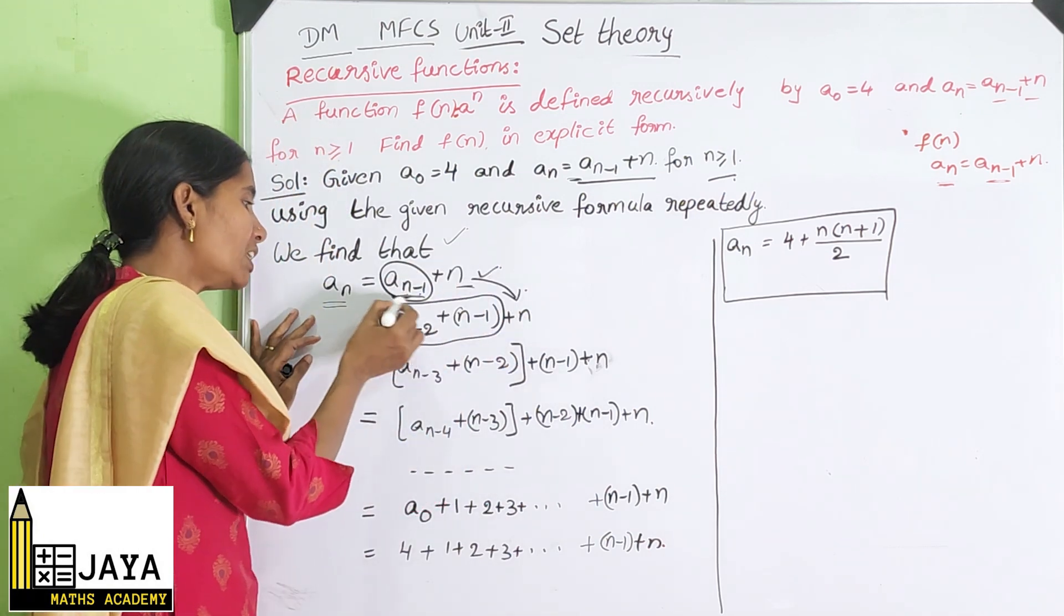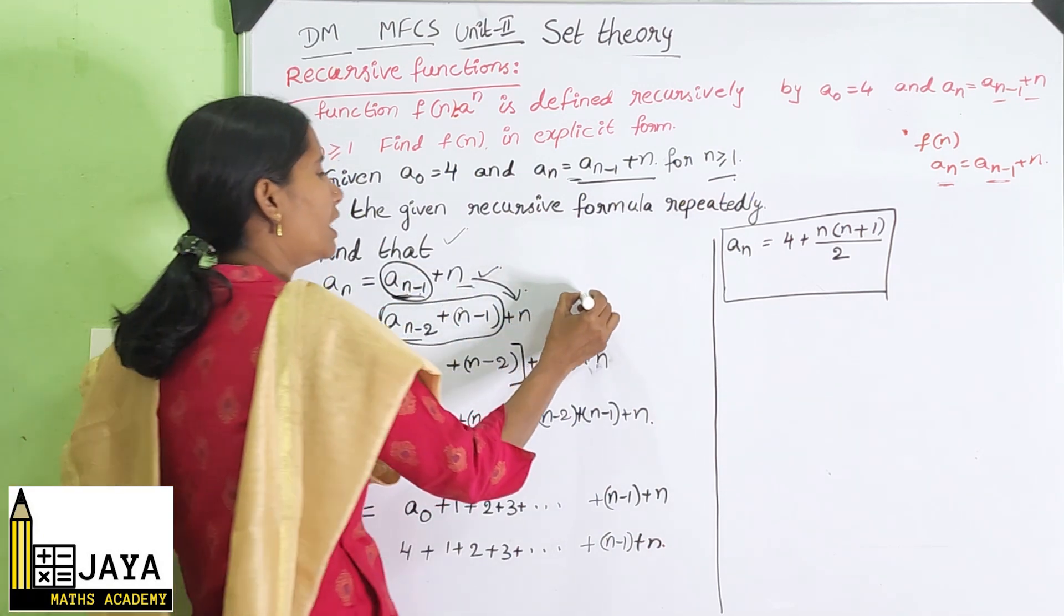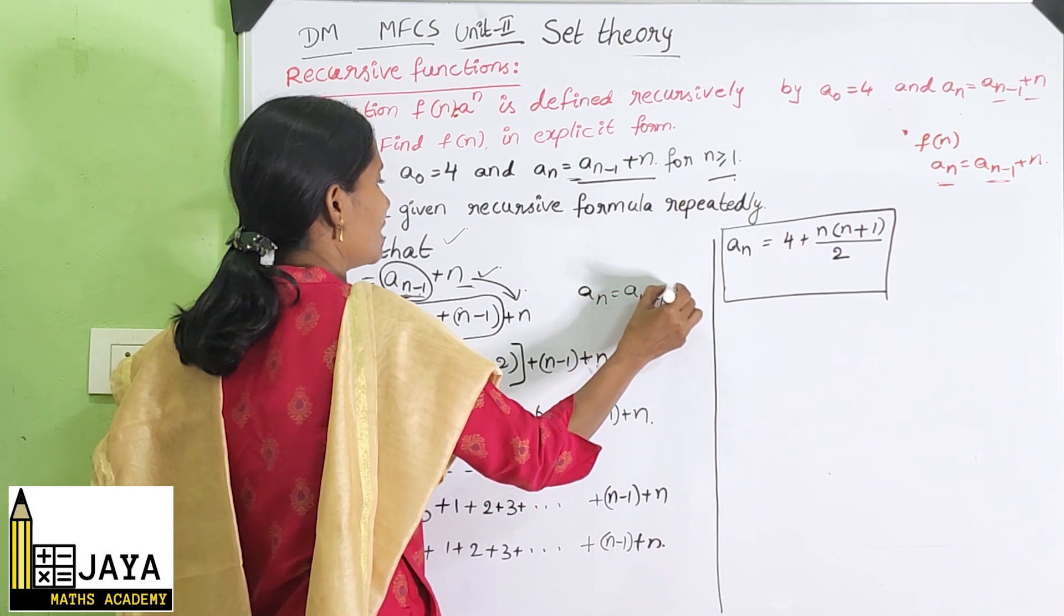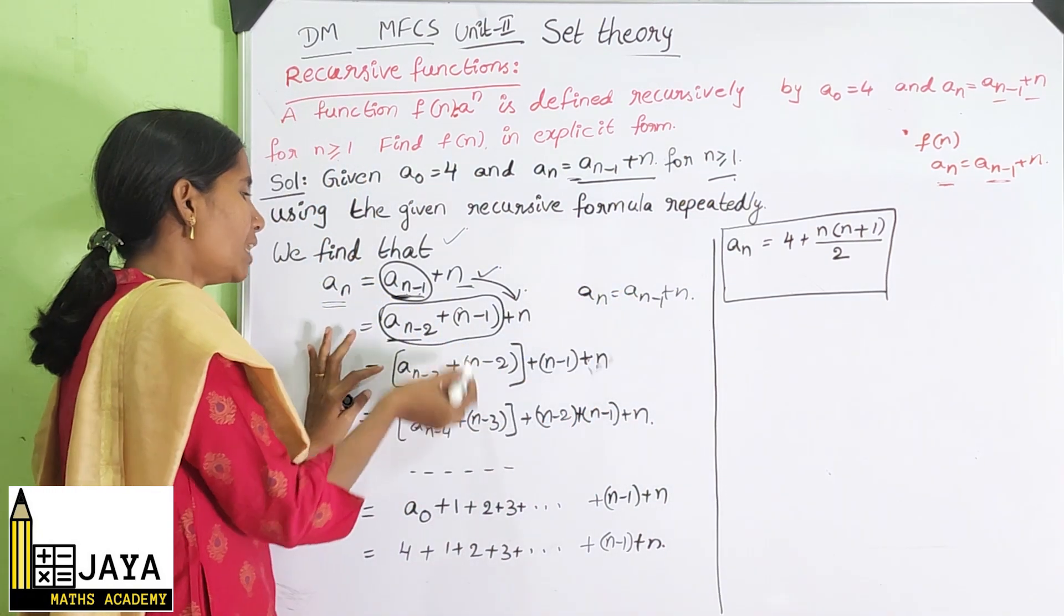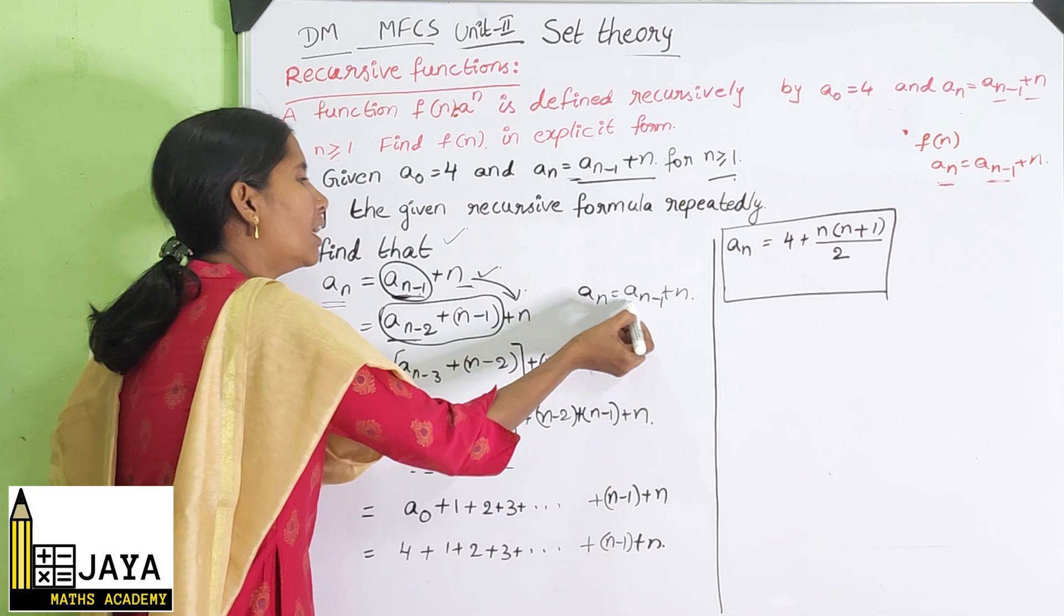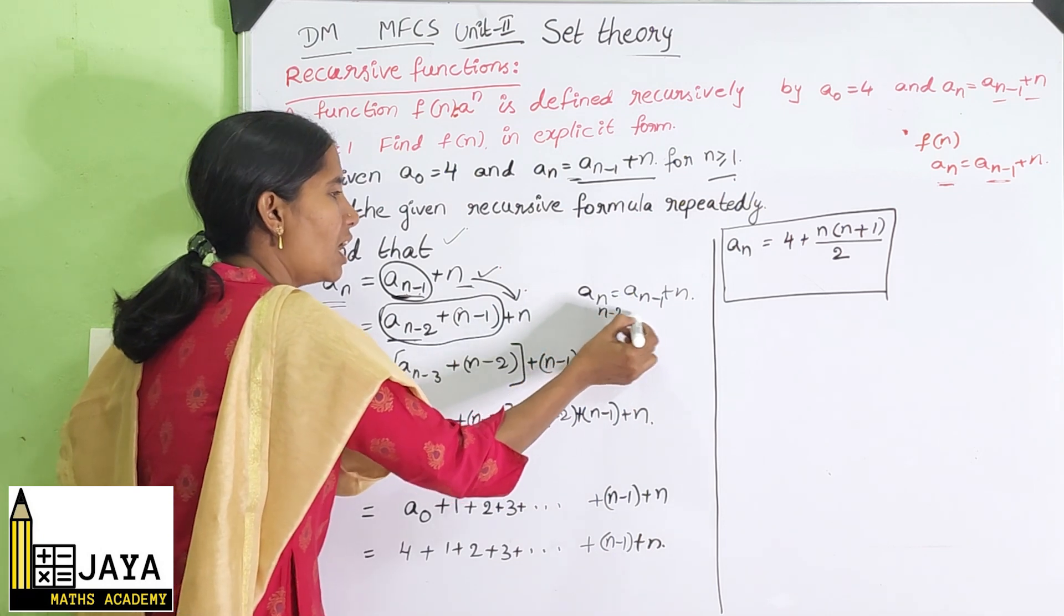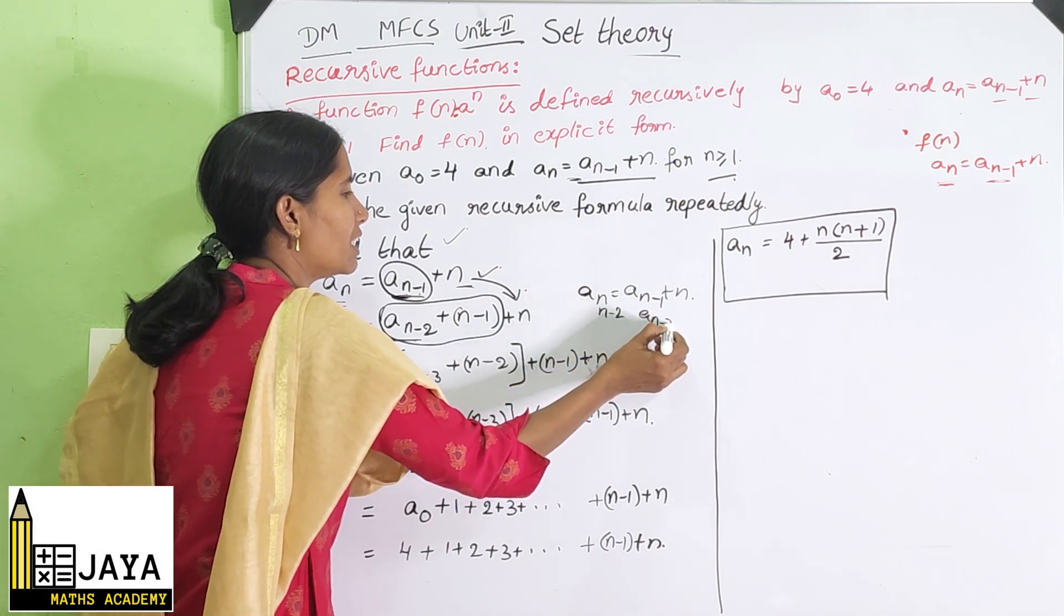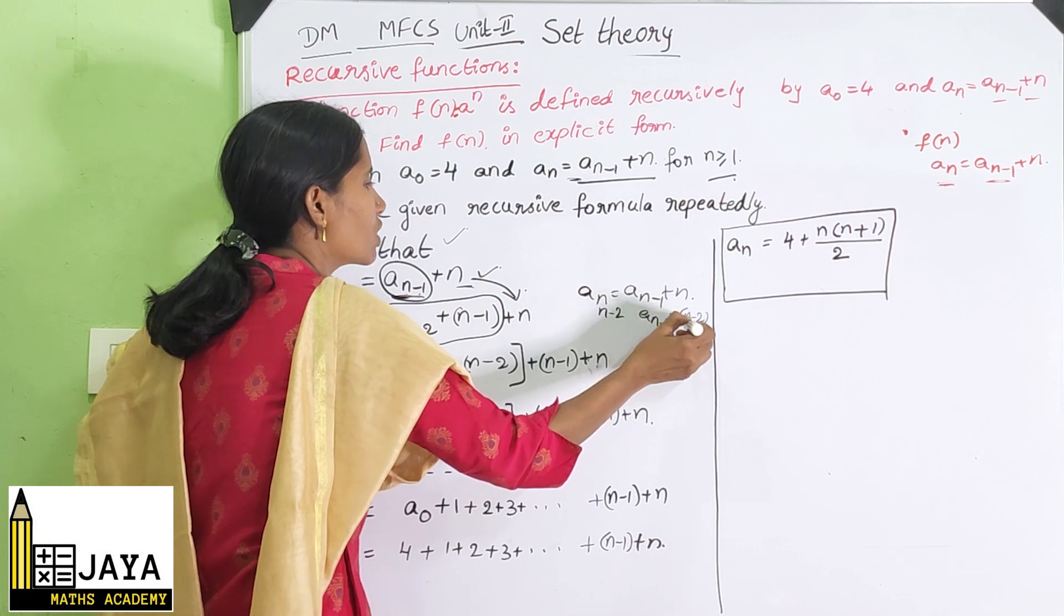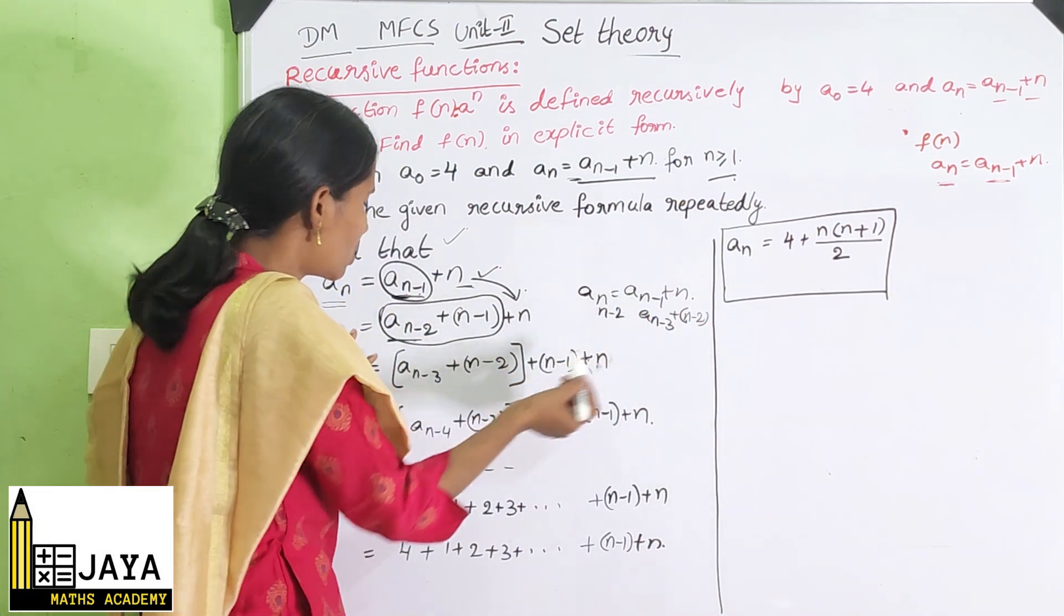Next A(n-2), we already know that A(n) = A(n-1) + n. A(n-2) becomes A(n-3) + (n-2). Substitute that.